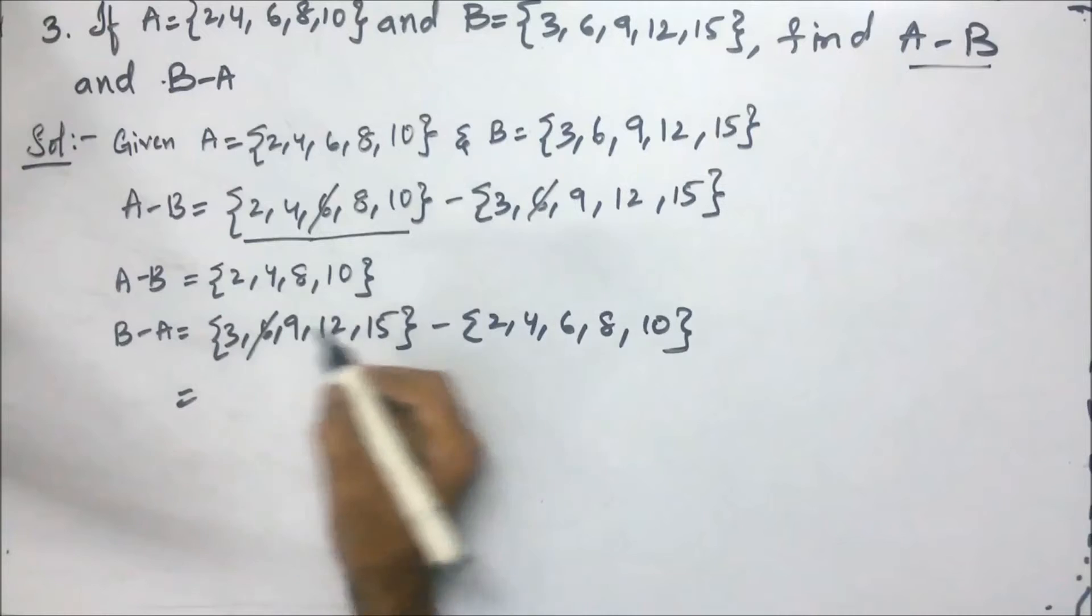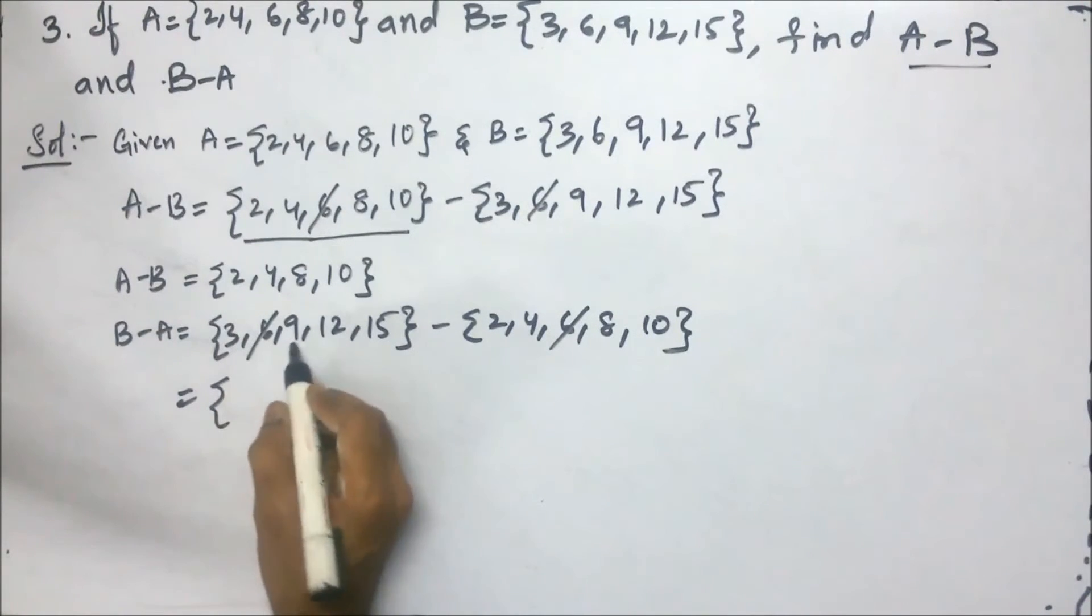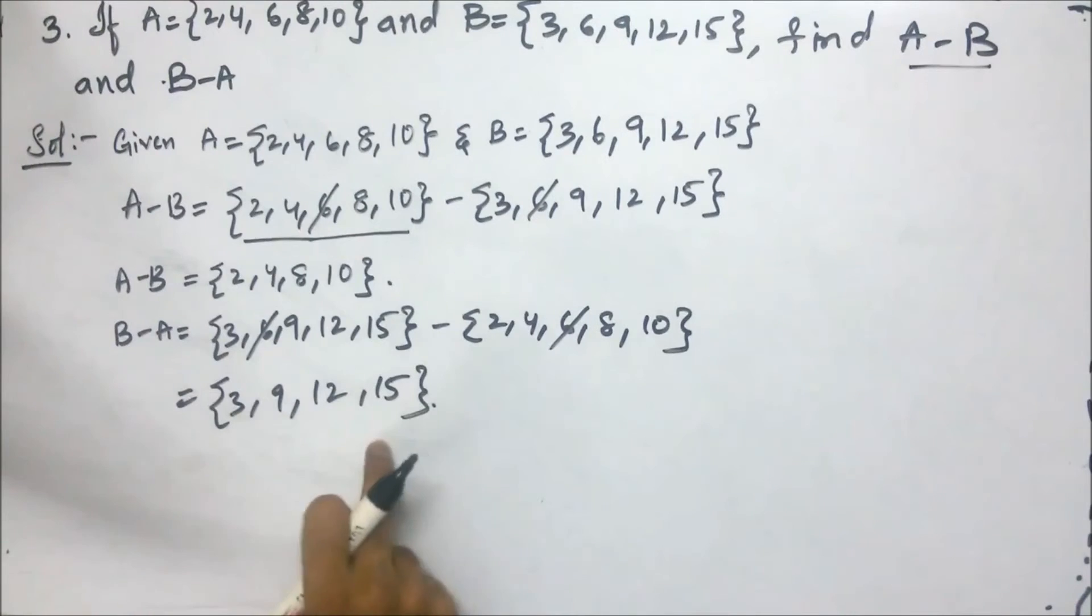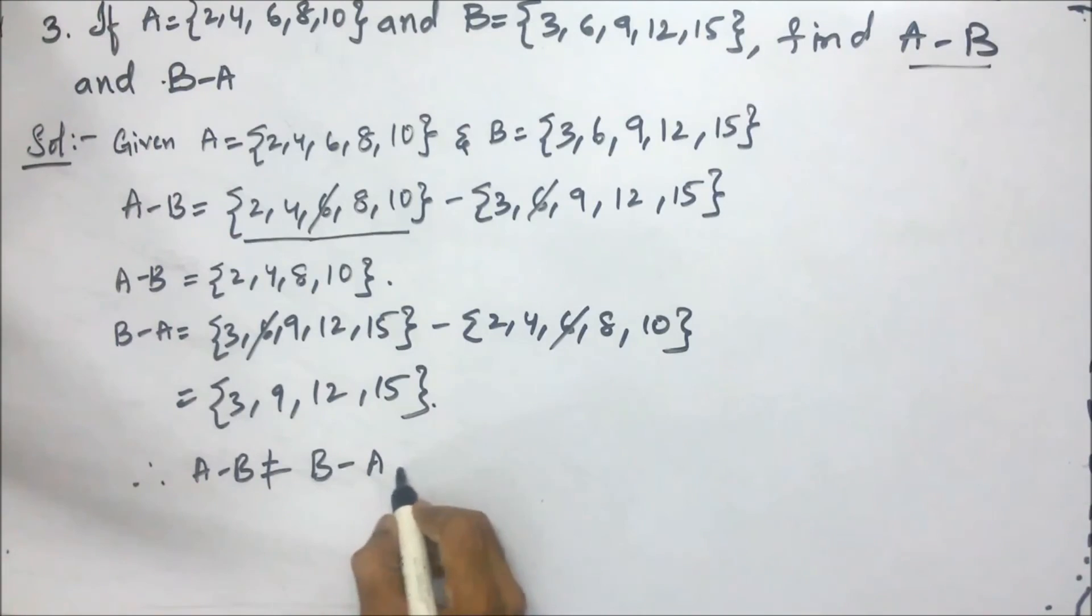The same element again we will cancel 6 and 6. Then the left are 3, 9, 12, and 15. From these two, we can conclude that A minus B and B minus A both are not the same. Therefore, A minus B is not equal to B minus A.